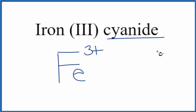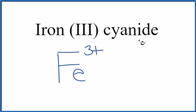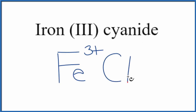The cyanide ion is not on the periodic table. This is one you either memorize, or if you're allowed, you can look it up on a table of polyatomic ions. The formula for the cyanide ion is CN, and the whole thing has a 1 minus ionic charge.